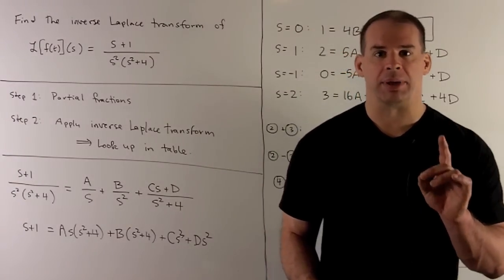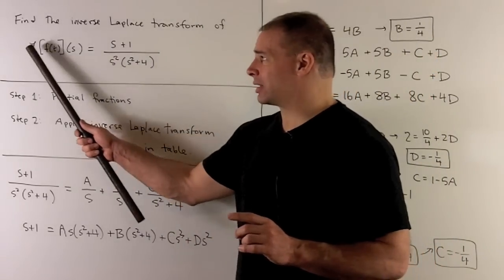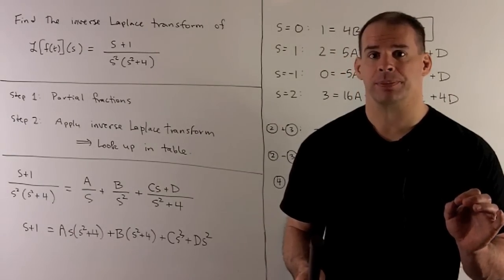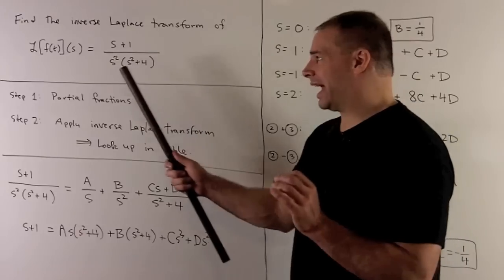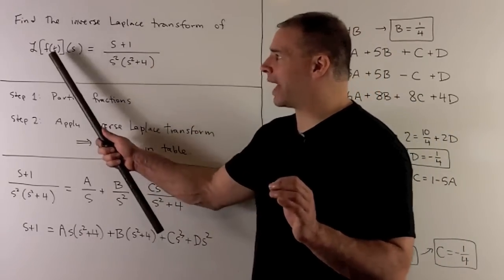Now, what's happening here? We're going to have a function f of t. We're going to take this Laplace transform. It's going to give us back another function in the variable s. Now, here, we're given the answer. We're told what the Laplace transform is, but we're not told what f is.